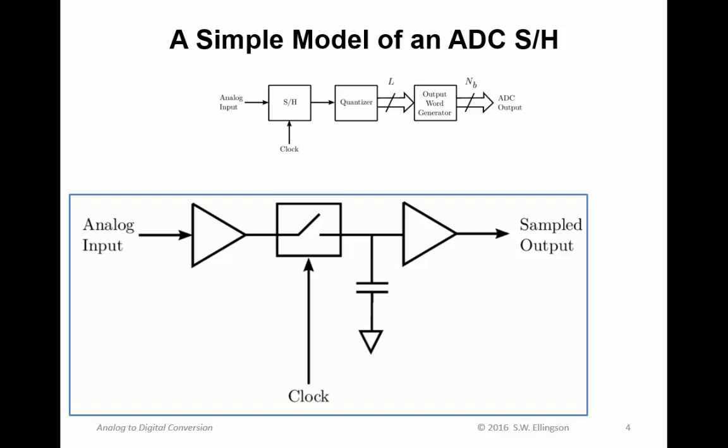So first the sample and hold. The idea is very simple: we have an input buffer, output buffer, and a switch operating according to a clock. When the switch is closed it's charging up this capacitor, and when the switch is open the capacitor is discharging into the output. When it's discharging into the output, the output is relatively constant. So the analog input produces output that looks like this, converting the continuously varying input into an input which is fixed at some value, and that time over which it is fixed is determined by the clock.